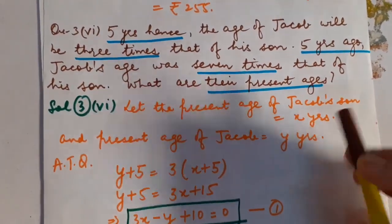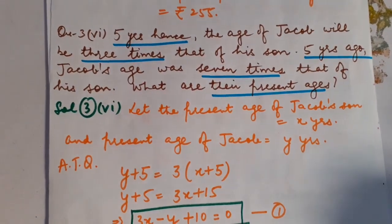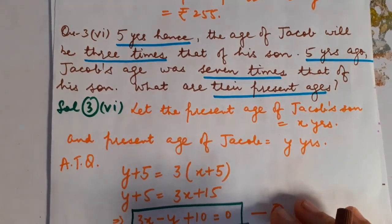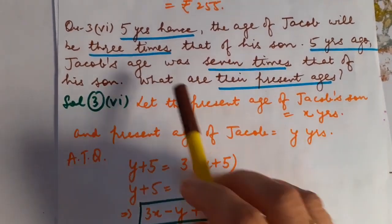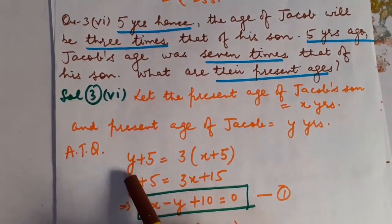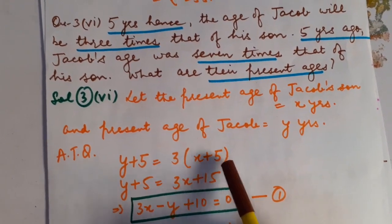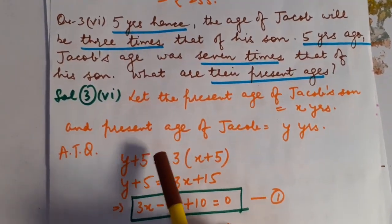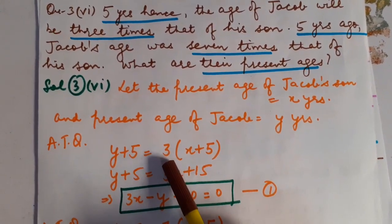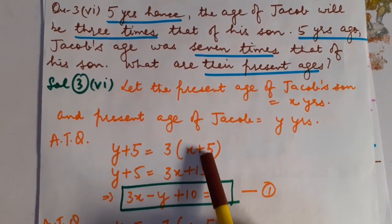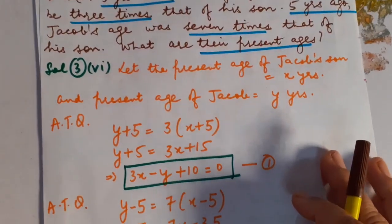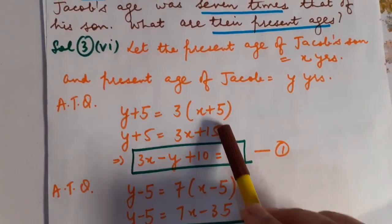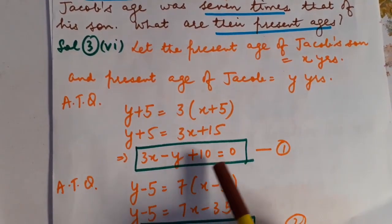Children, suppose if my present age is 20 years, then after 10 years my age will be 30 — I have just added 10 years. In the same manner, five years later Jacob's age will be Y plus 5 and his son's age will be X plus 5. According to the question, five years later Jacob's age is thrice his son's age, so Y plus 5 = 3(X plus 5), which gives 3X minus Y plus 10 = 0.